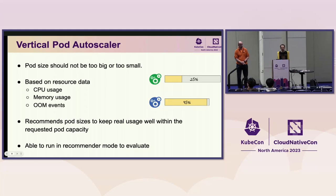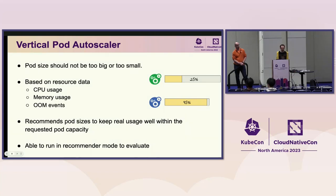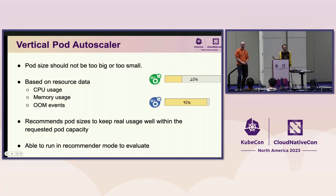Vertical Pod Autoscaler aims to right-size your pods in terms of their CPU and memory requests. It looks at historical resource usage — for example, if a pod has only used 25% of its CPU, it will decrease the amount requested. It's based on CPU usage, memory usage, and OOM events too. It recommends pod sizes to keep real usage well within the pod's request capacity. You can run it in a dry-run mode to look at recommendations and evaluate whether you want to apply them.